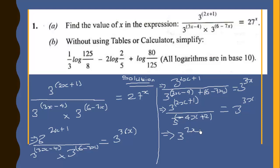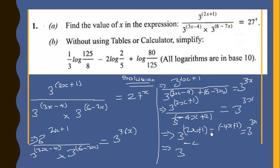Now the bases are dividing, so we subtract the exponents: 3 to the power 2x plus 1, minus the exponent negative 4x plus 2, equals 3 to the power 3x. Simplifying: 2x minus negative 4x gives us positive 6x, and 1 minus 2 gives us negative 1. So we have 3 to the power 6x minus 1 equals 3 to the power 3x.